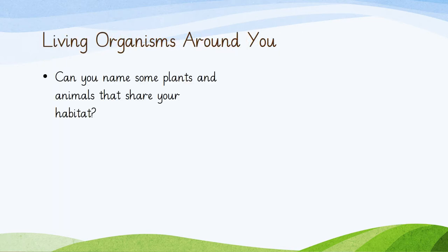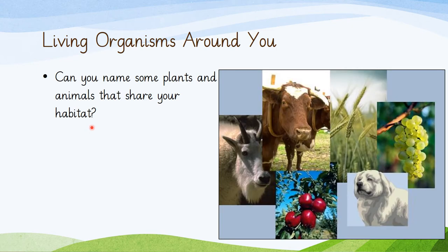Can you name some plants and animals that share your habitat? Think of some plants and animals that live in the area around you. Are these some of those animals? Goat, cow, wheat crop, grapes, dog, and tomatoes. How many of these living organisms — plants and animals — live in the area nearby you?